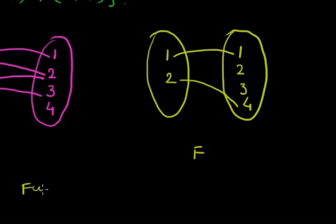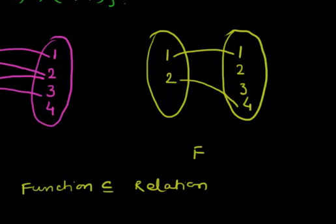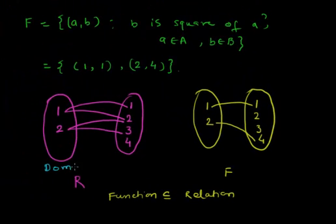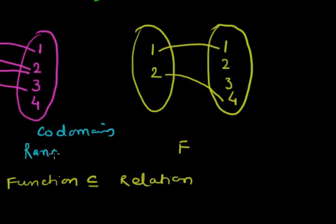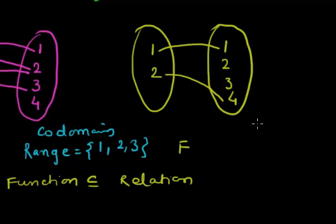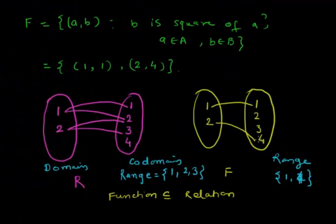Every function is a relation; a function is a subset of relation, but every relation is not a function. The first set from which we draw the mapping is called the domain set, and the other set is called the co-domain set. Range are those elements of the co-domain which have been mapped to by elements of the domain set. Range is a subset of co-domain.